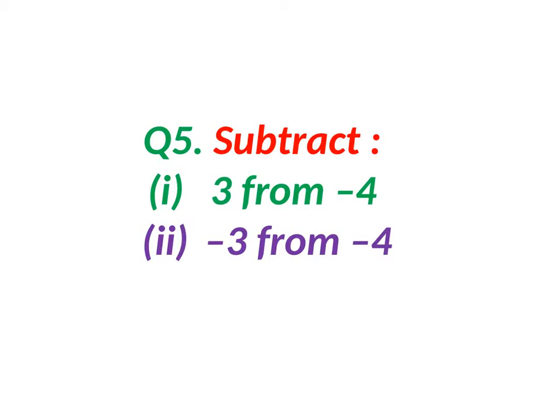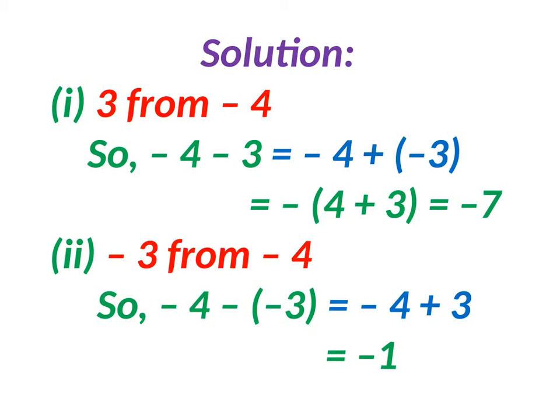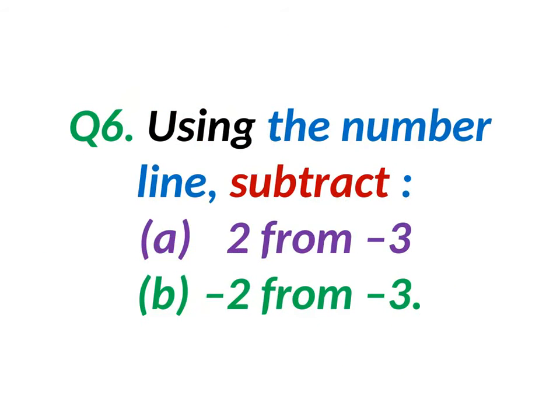Subtract 3 from minus 4. So 3 from minus 4 means minus 4 minus 3, just like addition of two negative integers. The answer is minus 4 minus 3 equals minus 7. Minus 3 from minus 4 equals minus 4 minus minus 3, which is minus 4 plus 3, equals minus 1.